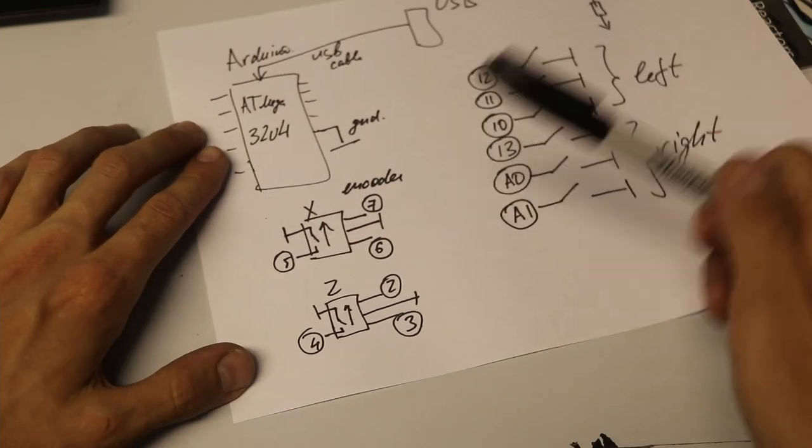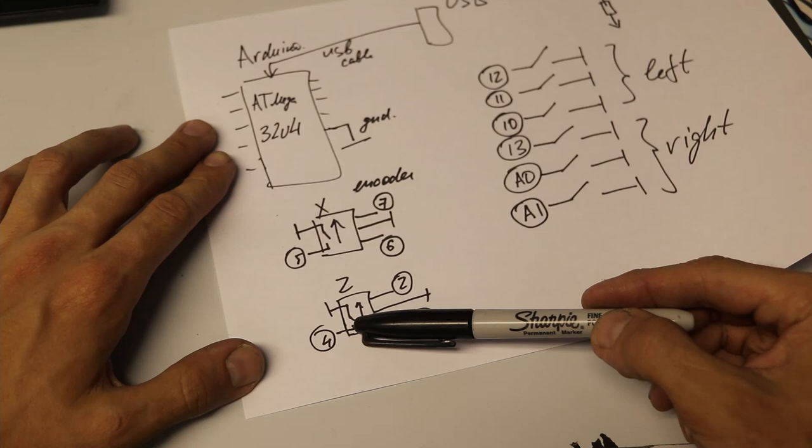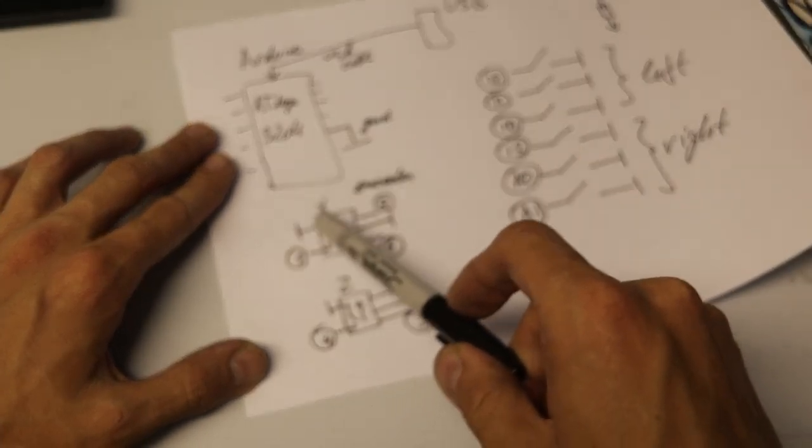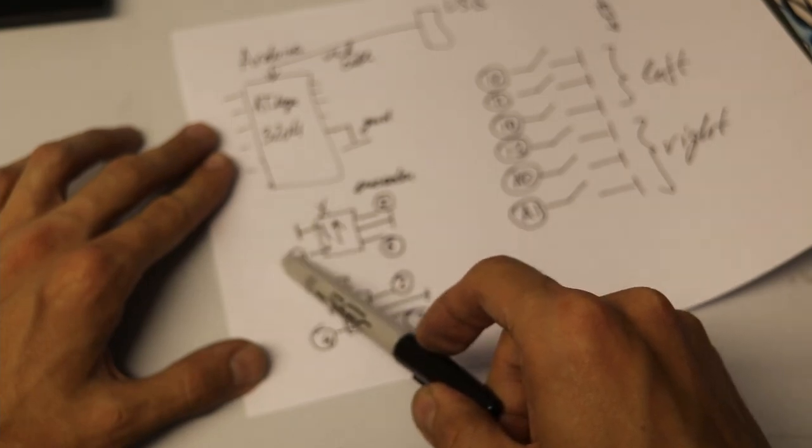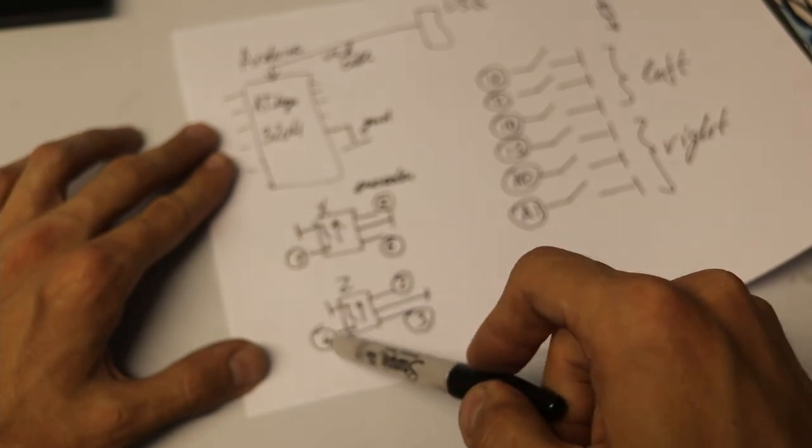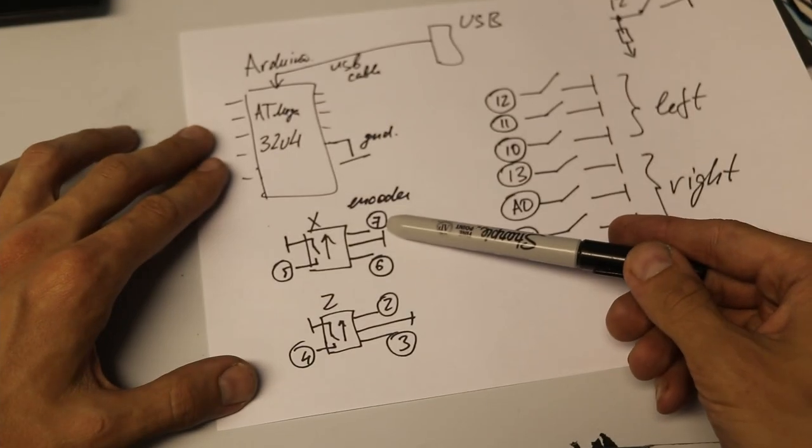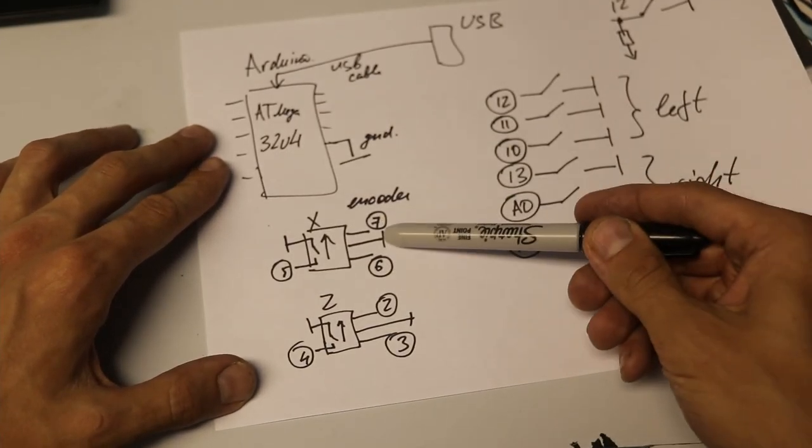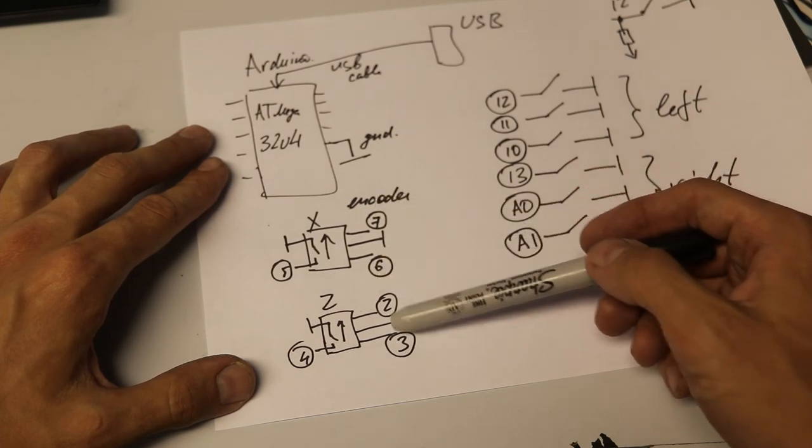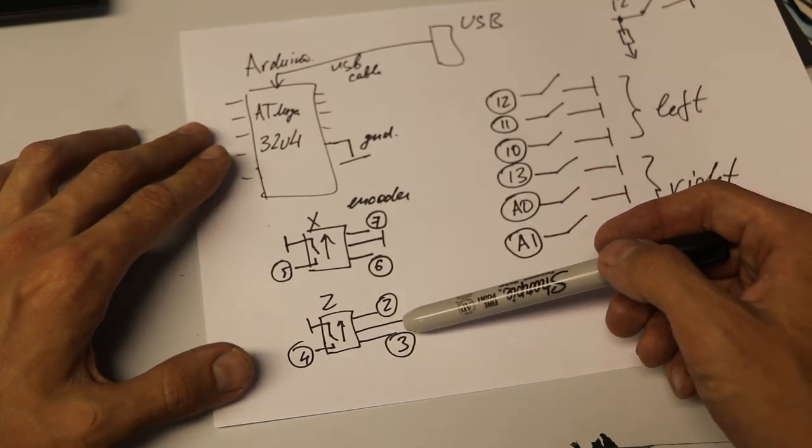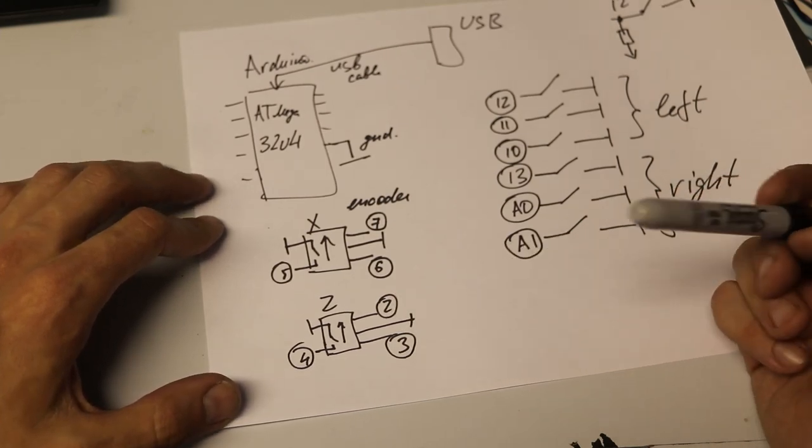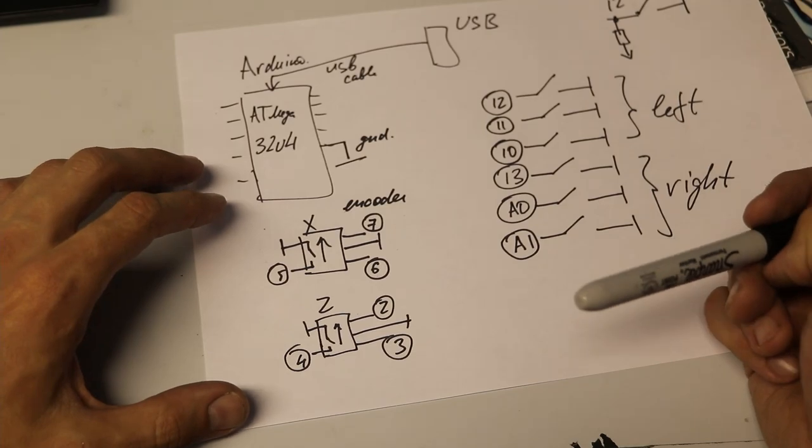And we have two encoders - X and Z encoders. The buttons of the encoder are connected the same way - pull up and the buttons 5 and 4. And we have also the actual encoder bits - ground and two pins 6 and 7. It's a bit better to have hardware interrupt pins, but we are not talking about time critical applications here, so good enough.